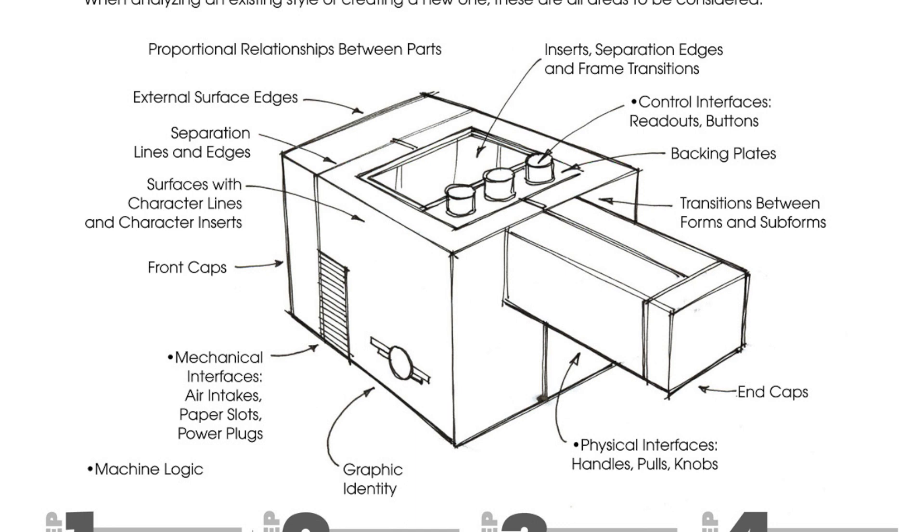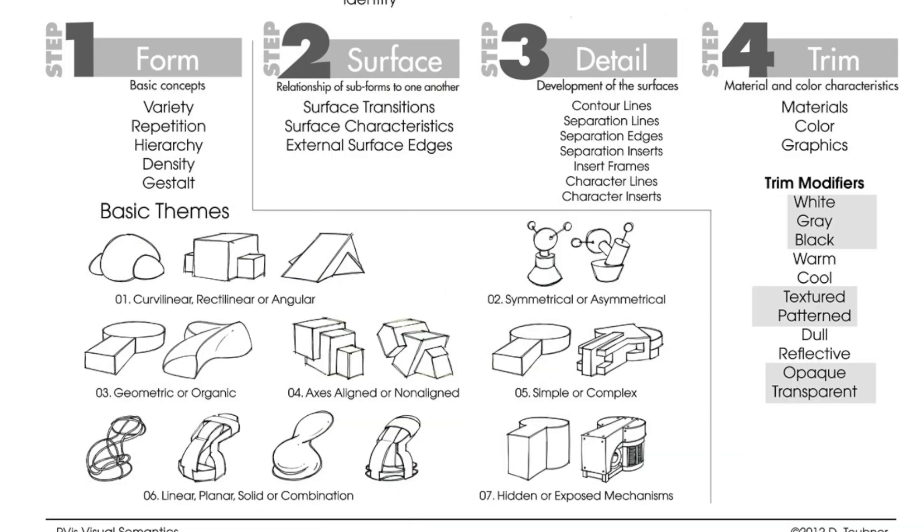This part of the handout is pretty cool - it talks about the different steps we should take as a designer to design our product. You don't want to be designing the trim when you haven't even designed the forms and what it's going to look like. You have to go through these steps. The first step is starting with form and basic concepts - the overarching concepts, variety, repetition, hierarchy, density, gestalt.